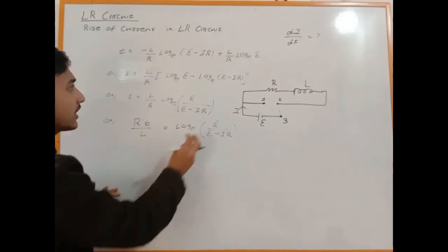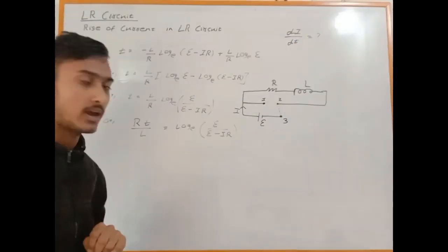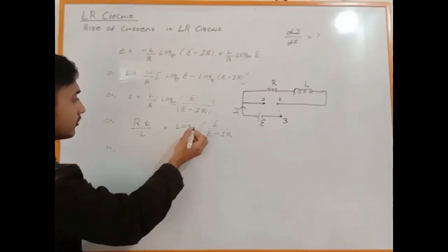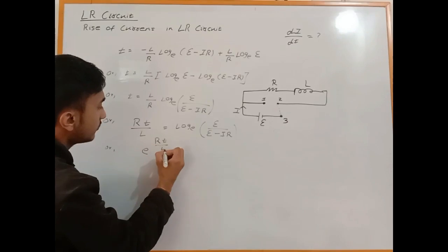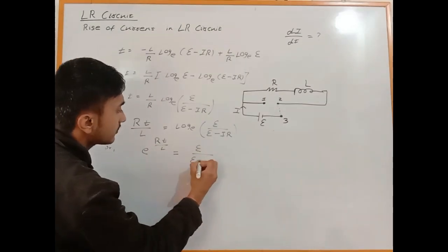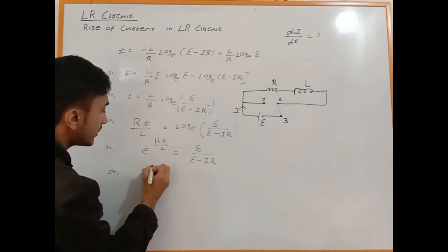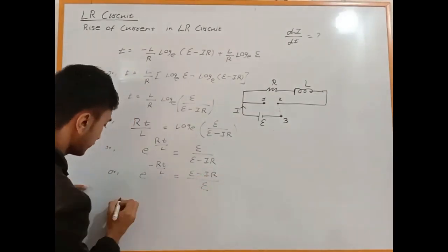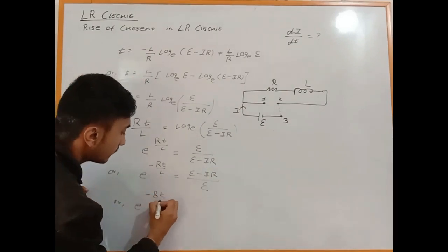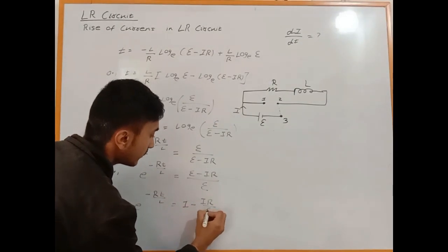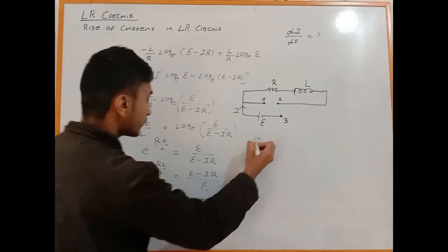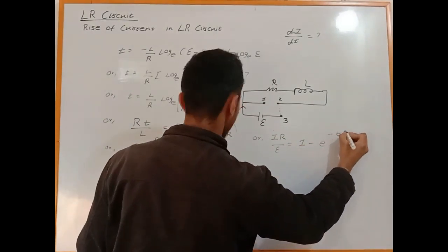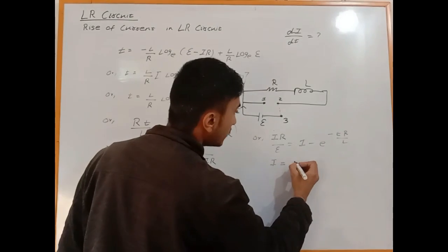We get: t times R/L equals log(E divided by E minus IR). Taking exponential of both sides: e to the power (RT/L) equals E divided by (E minus IR).